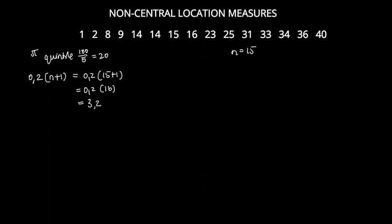The first quintile lies somewhere between the third data value (which is 8) and the fourth data value (which is 9), but we can't tell exactly where. We need an additional step: we take the decimal part, 0.2, for the next calculation.